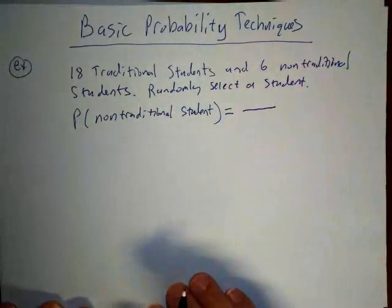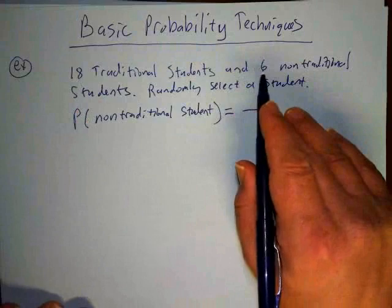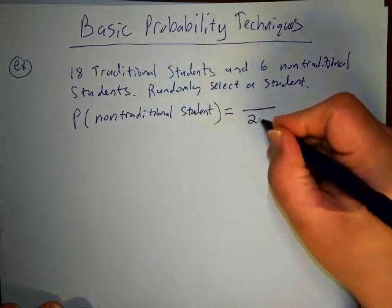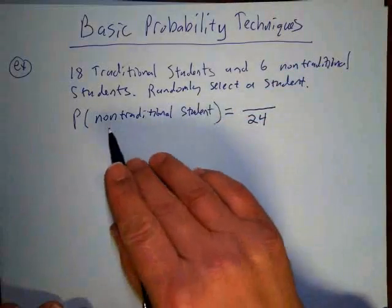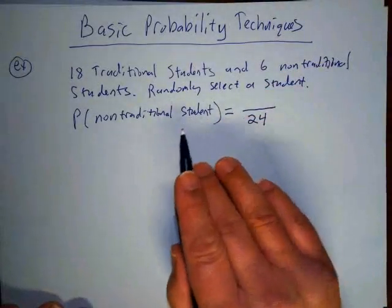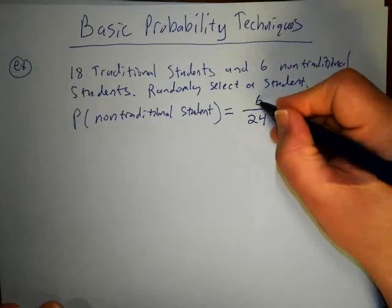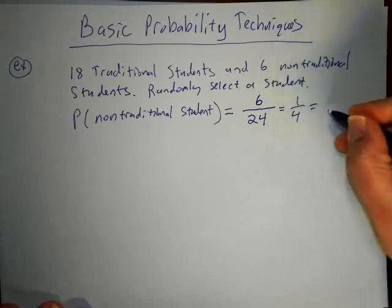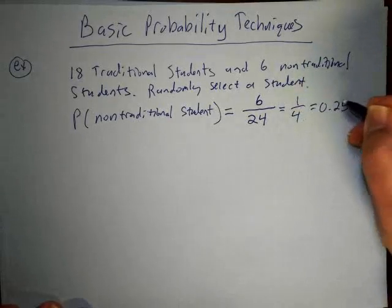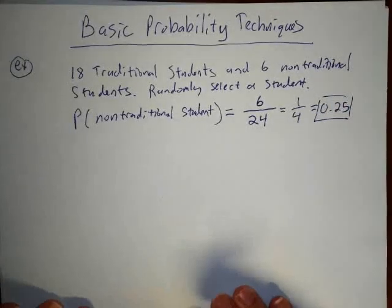First, we need to know the total number of outcomes in the experiment. To find that, I need to add 18 and 6 together to get the total number of students in the class, which is 24. To find the probability that the student is non-traditional, the numerator is the number of non-traditional students: 6. So 6 over 24 reduces to one-fourth, and the probability is 0.25.